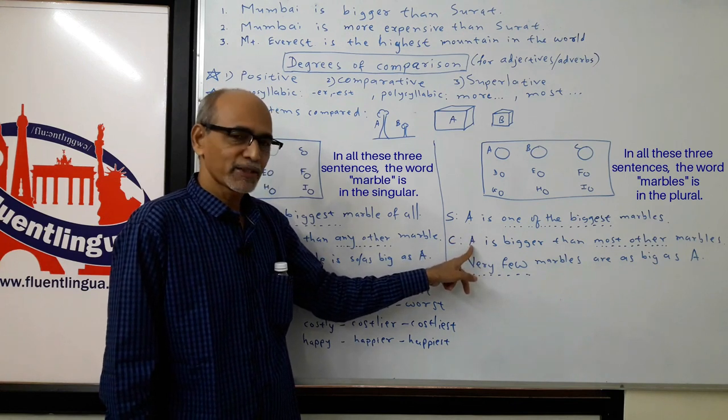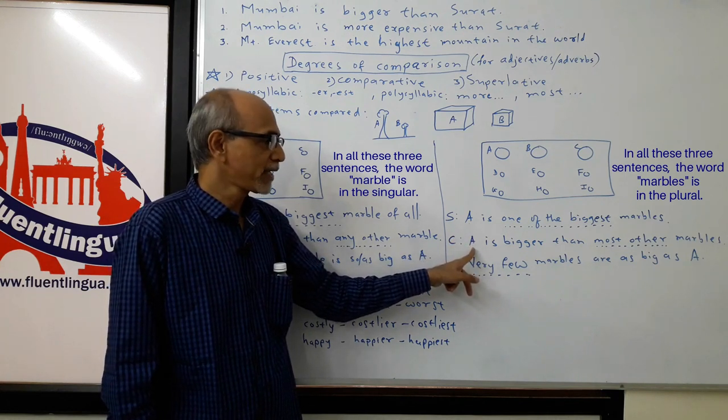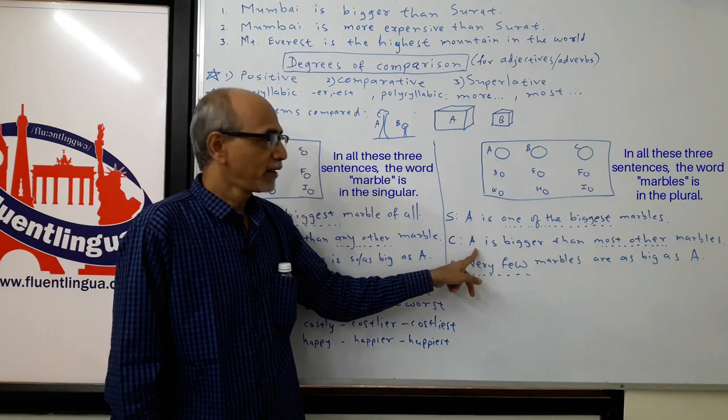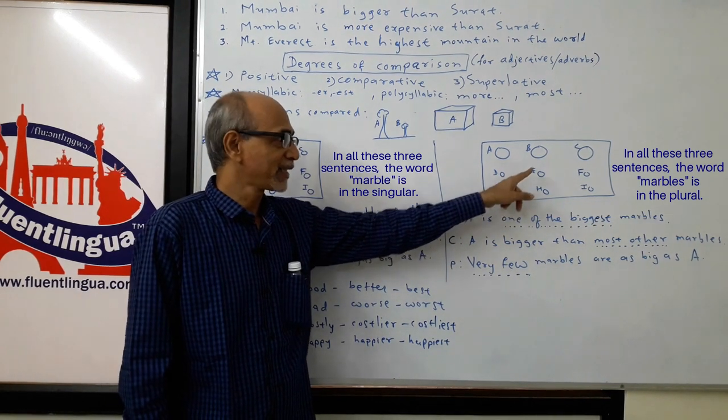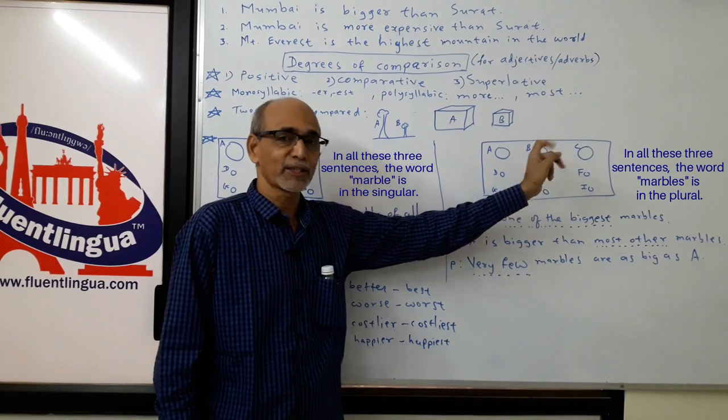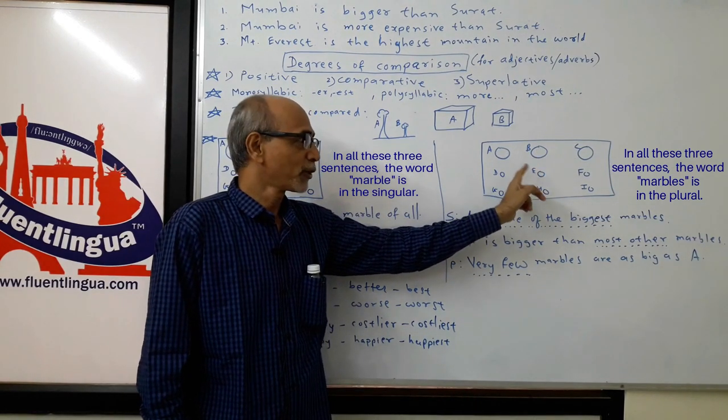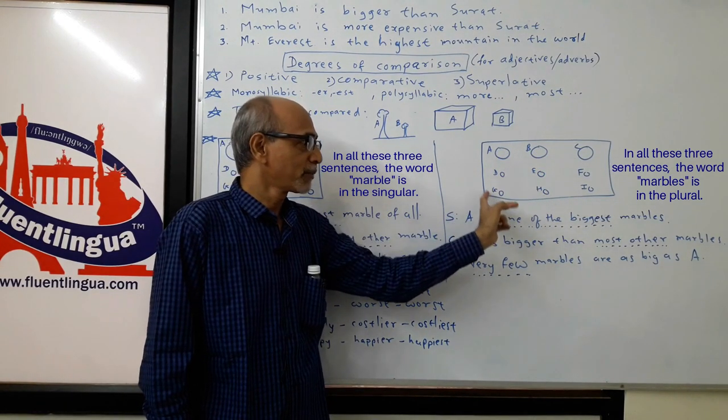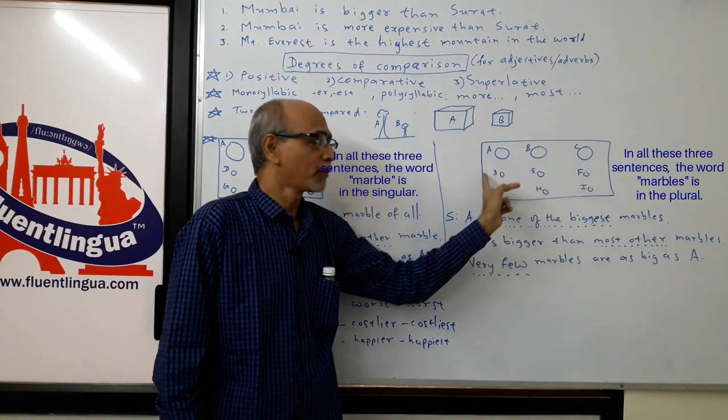In comparison, in comparative form, we can say A is bigger than—we cannot say any other, because in that case for B and C the sentence will be wrong. So we have to say A is bigger than most other marbles.